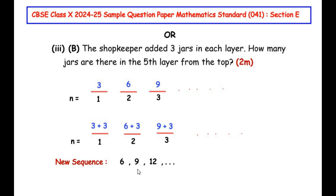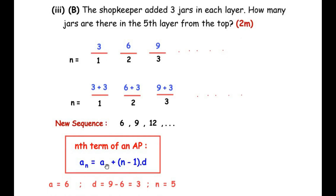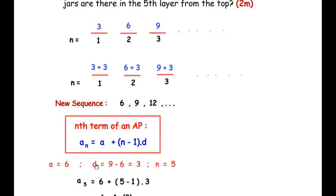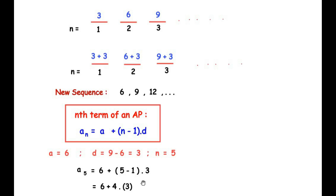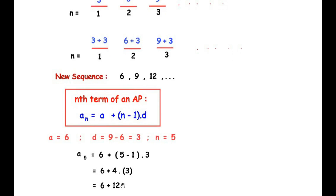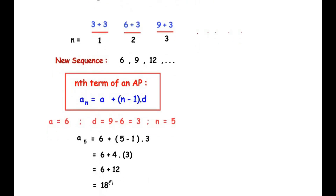In the new sequence the first layer has 6, second has 9, third has 12. We need to find the fifth layer. Using the nth term formula aₙ = a + (n−1)×d, the new first term a = 6, common difference d = 9−6 = 3, and n = 5. So a5 = 6 + (5−1)×3 = 6 + 4×3 = 6 + 12 = 18 jars in the fifth layer.